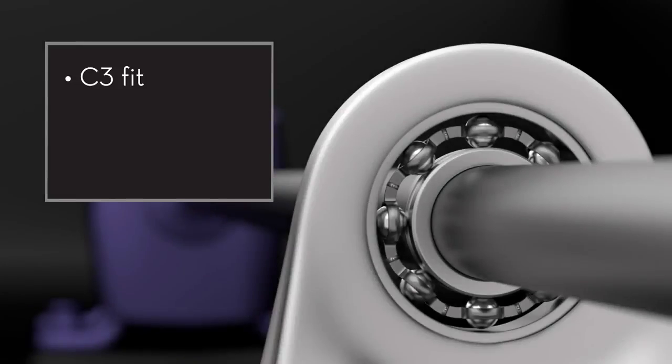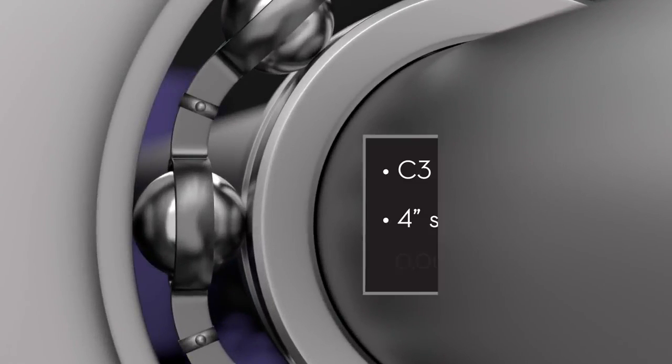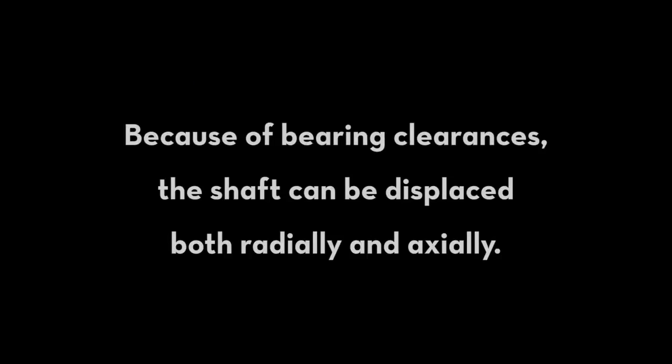With a C3 fit and a 1-inch diameter shaft, the clearance is between a half a thou and one thou. With a C3 fit and a 4-inch diameter shaft, the clearance is much larger, between a thou and two and a half thou.